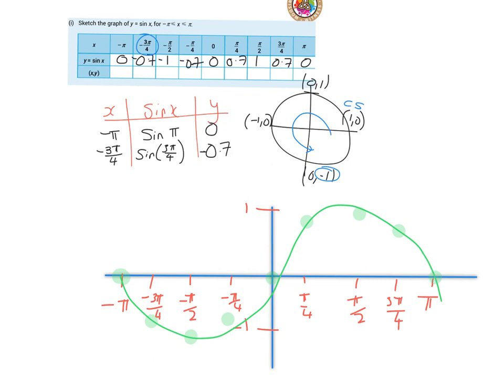So it repeats itself every 2 pi. So we say that the period here is 2 pi and the range is 1 to minus 1.